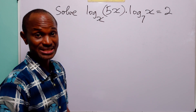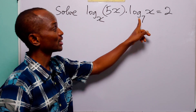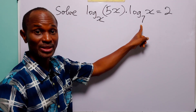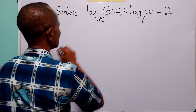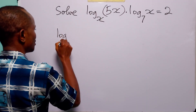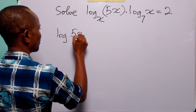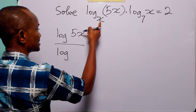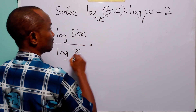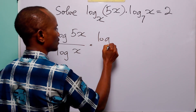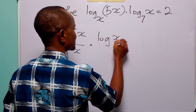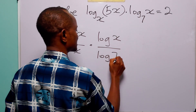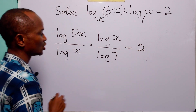Finally, even if we decide not to work in base x or base 7, we can change everything to base 10 — that is common logarithm. When we do that, this equation becomes log base 10 of 5x over log base 10 of 7, multiplied by log base 10 of x over log base 10 of x, equal to 2.